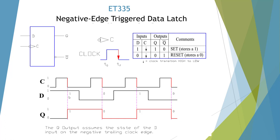At the negative edge we're going to look at the data. Here it's high. Look at this one — it's low. Then high. And low. We're only interested at that edge.